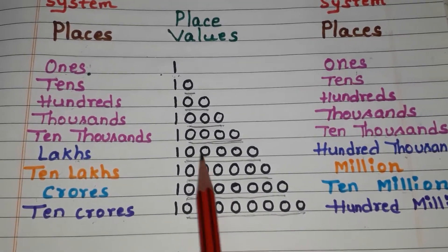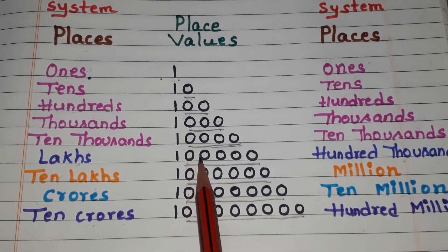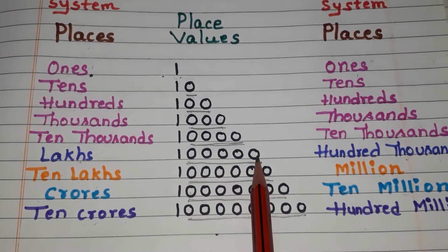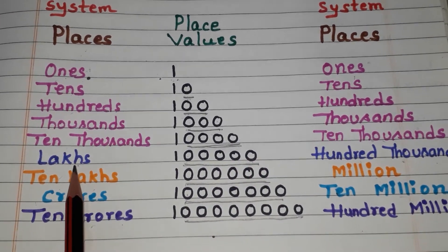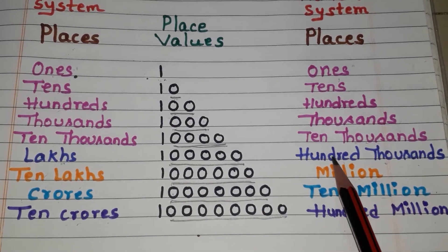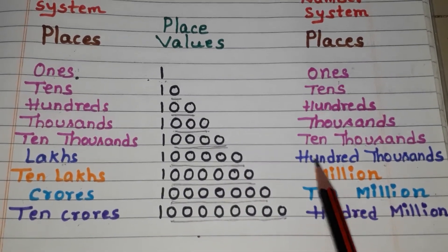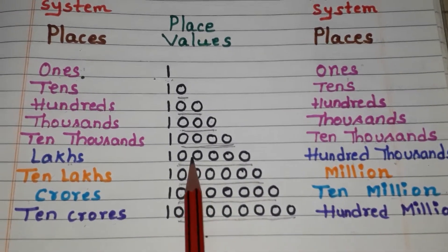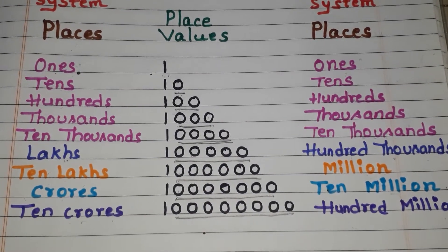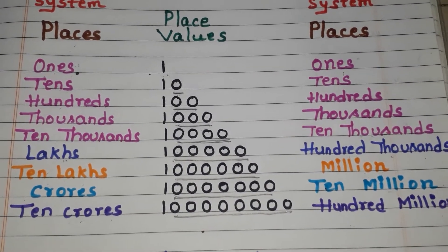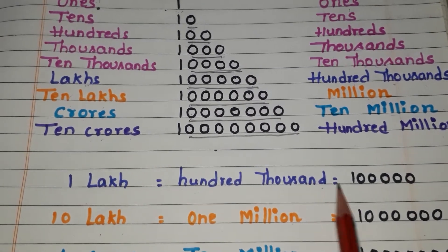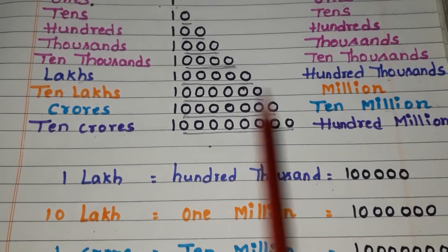Now observe — here how many zeros are there? 1, 2, 3, 4, 5. In the Indian system we call it lakhs, and in the international system we call it 100,000. The value is the same but we call it with different names. So 1 lakh is equal to 100,000.